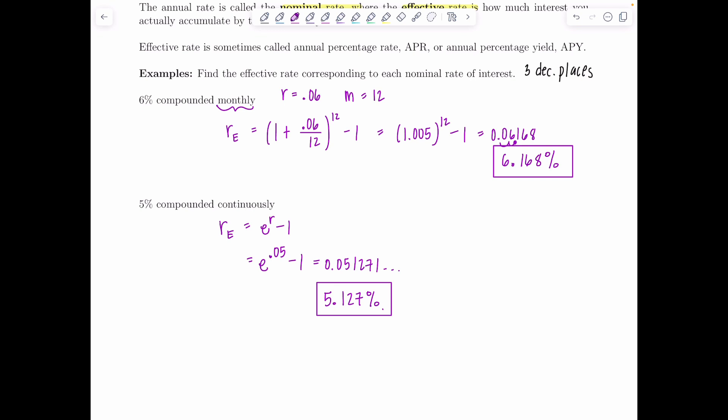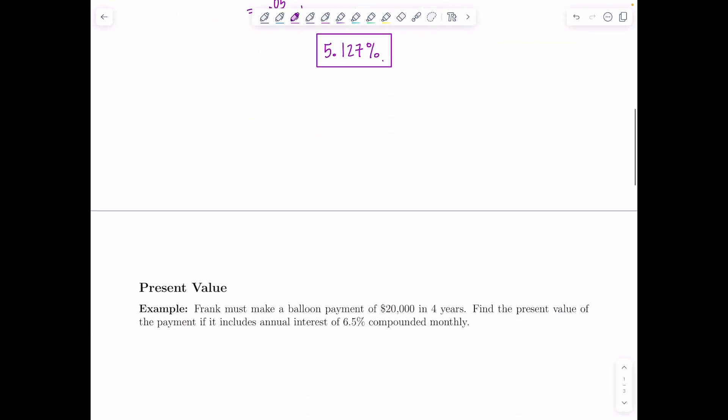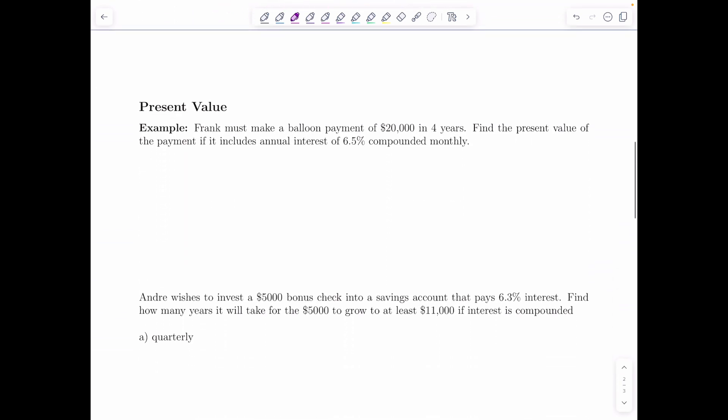Moving on, next idea has to do with present value. So all you need to do is refer back to the compound interest formula that we looked at a couple lessons ago. So remember it gave you A equals P times 1 plus R divided by M to the MT. So for some of these applications right now we're going to be solving for P the principal, or P will represent the present value and A is going to be some future value.